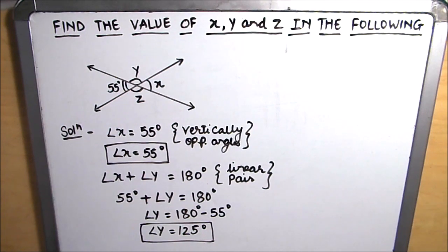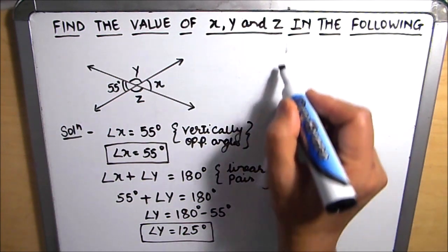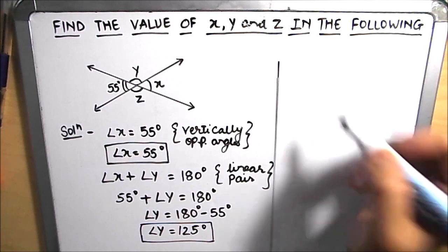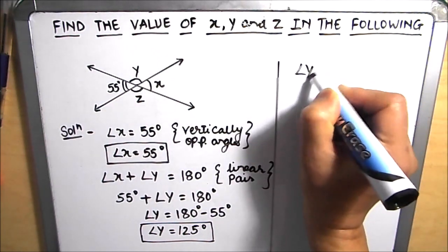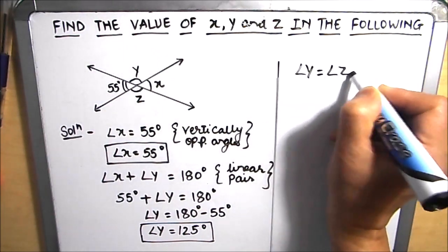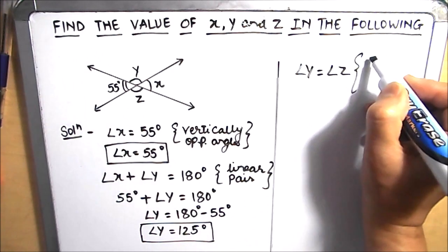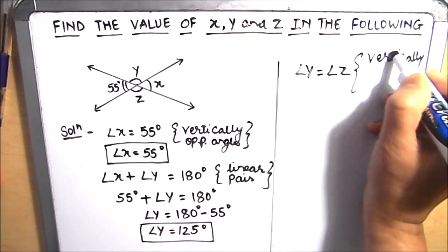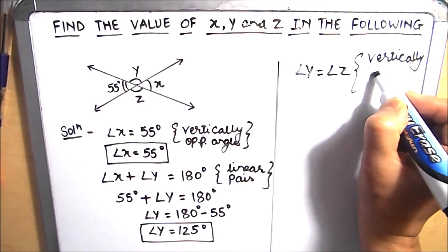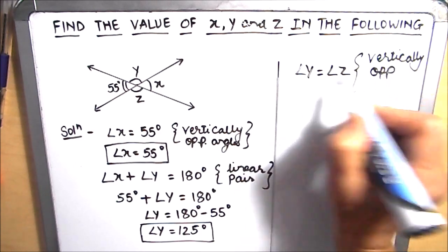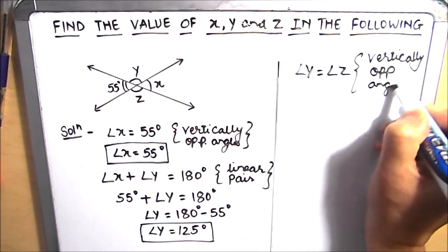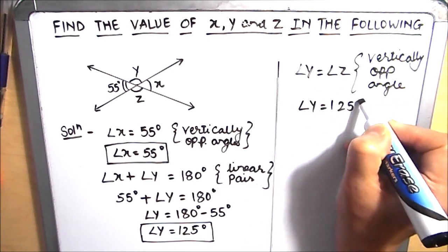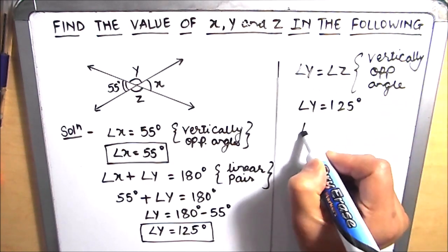Now we need to find the value of z. We can also see that angle y is vertically opposite to angle z. So these are vertically opposite angles, which means angle y is equal to angle z. Since angle y is equal to 125 degrees, angle z is also equal to 125 degrees.